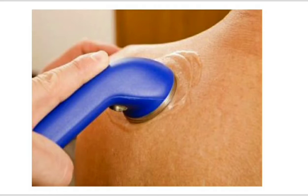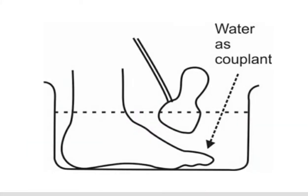In the direct contact method, the coupling medium is applied to the skin to eliminate air between the skin and the treatment head. The treatment head is moved in small concentric circles over the skin to avoid concentration at any one point. This technique is suitable for areas up to three times the size of the treatment head. The water bath method is used when direct contact is not possible due to the irregular shape of the part to be treated.